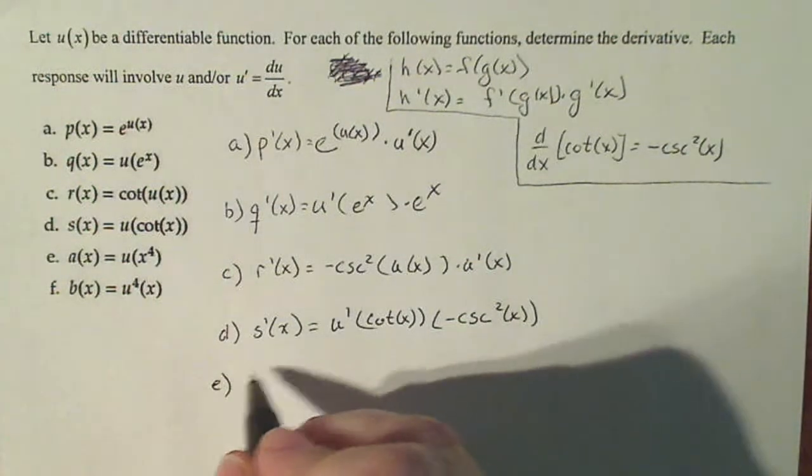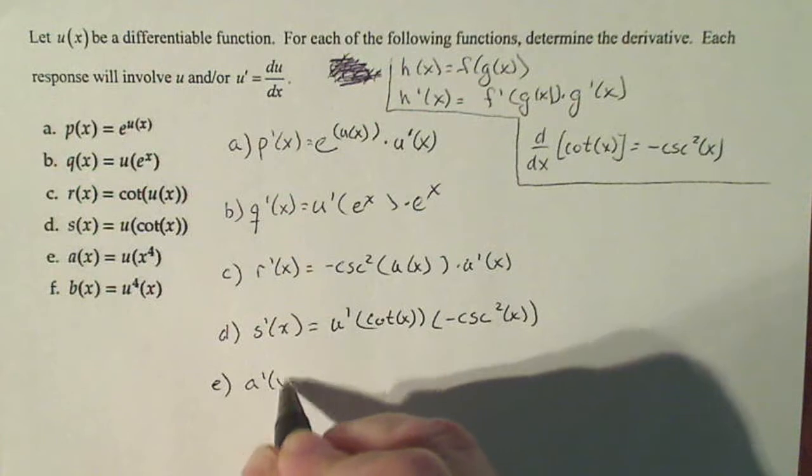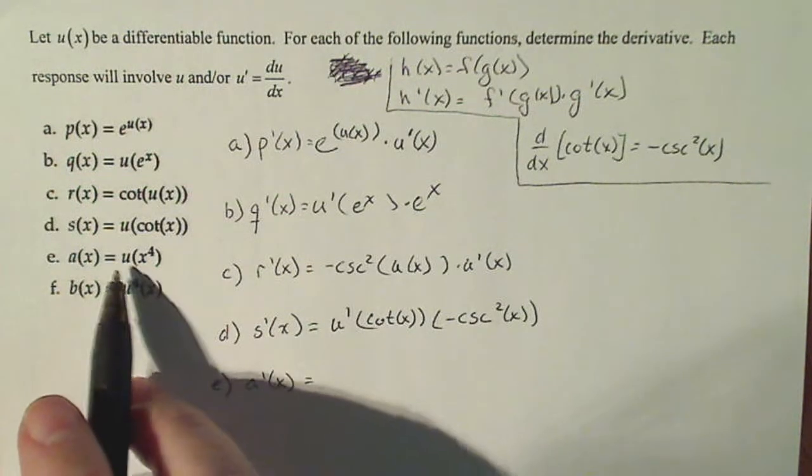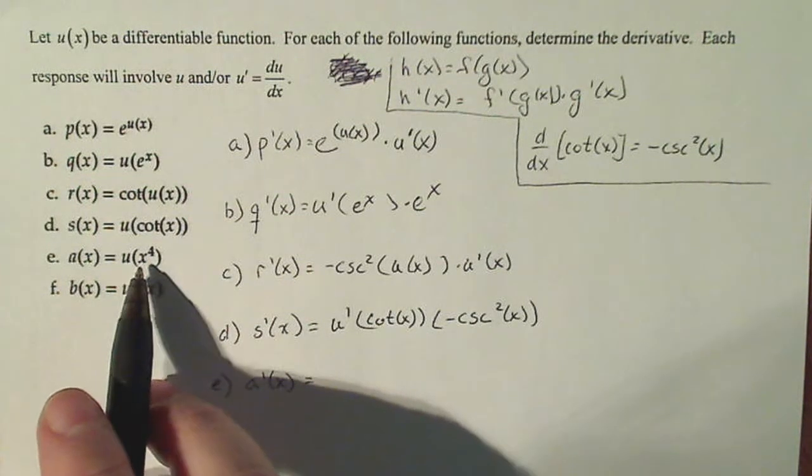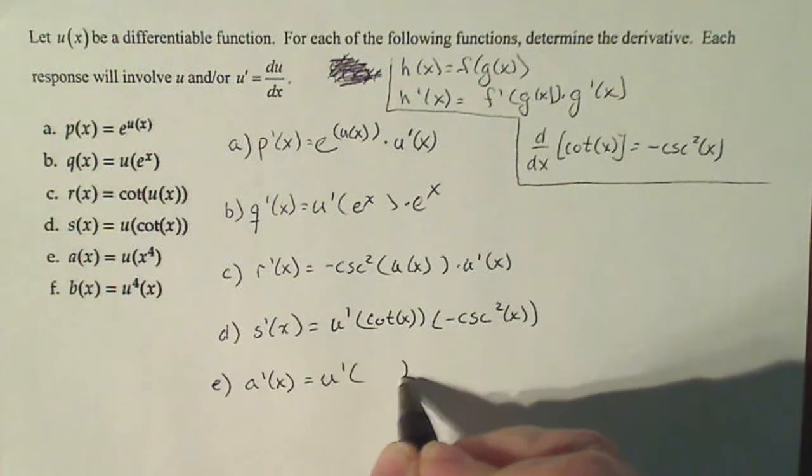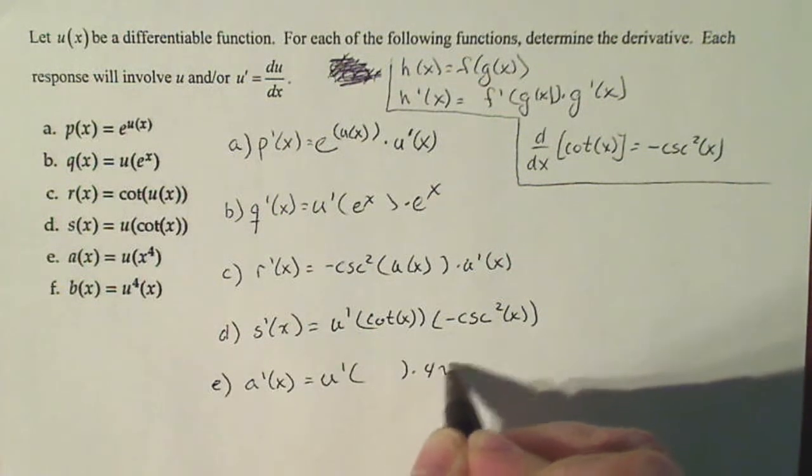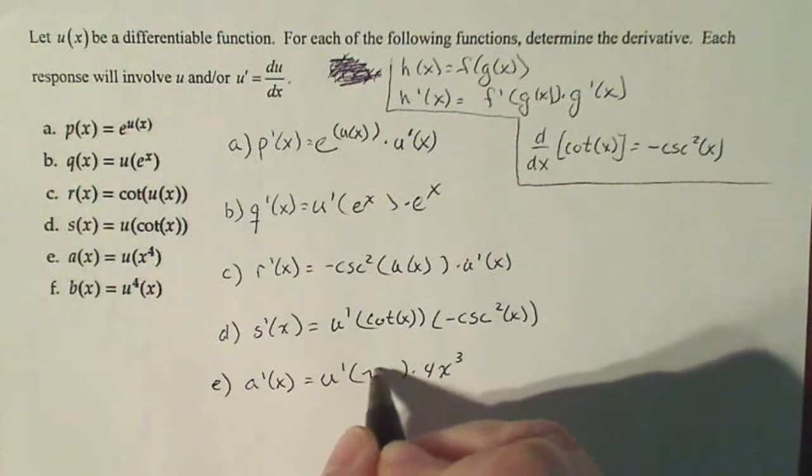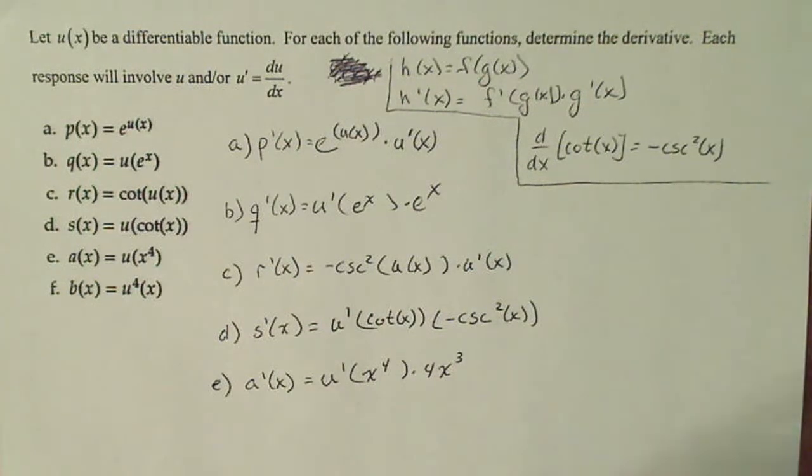E, a prime of x. Here u is outside, x to the fourth is inside. So the derivative of the outside, the derivative of the inside with the original inside and the derivative of the outside.